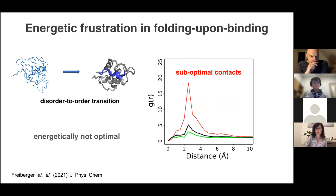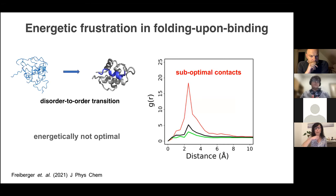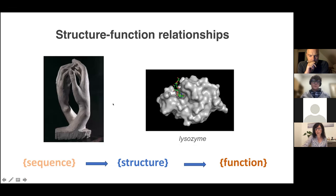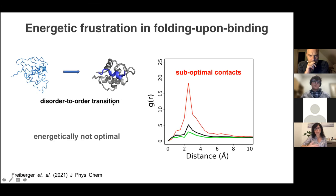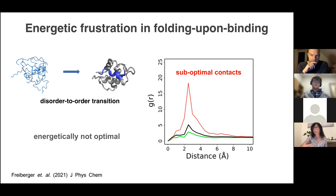The question is why proteins develop such context-dependent binding modes. Looking at this energetically, using the energy landscape framework in collaboration with Peter Boulines, we analyzed about 100 protein complexes for which we had experimental evidence of being disordered in the unbound state and folded in the bound form. We found that these are suboptimal—energetically frustrated. This is the density of frustrated contacts. For a large number of complexes with experimental evidence, we demonstrated that they are energetically not optimal, even though they bind and even though they fold.